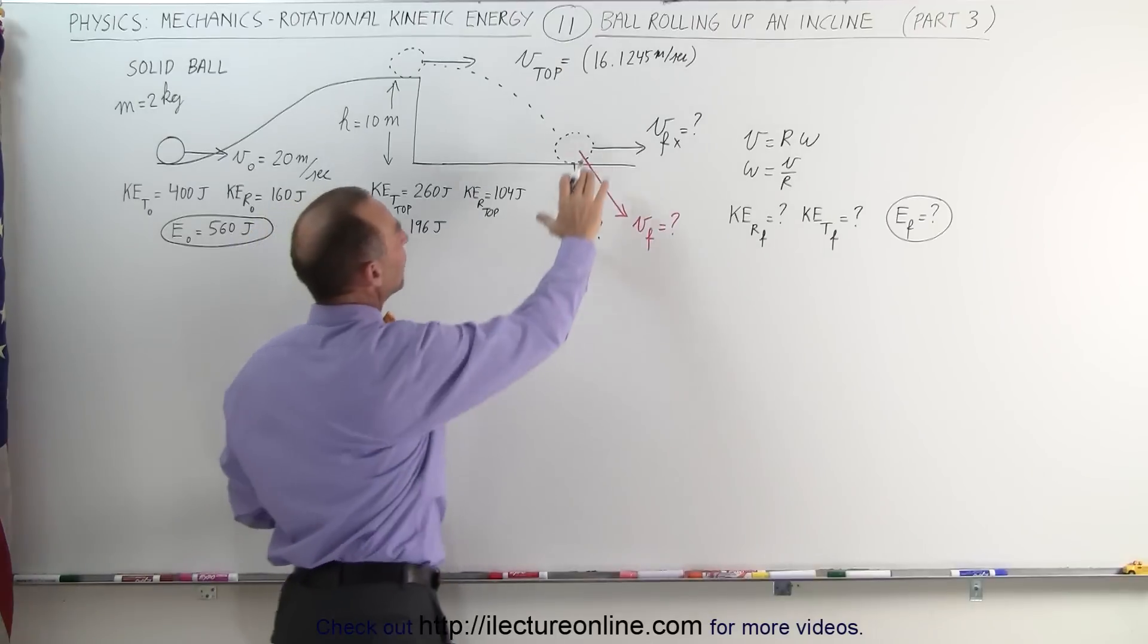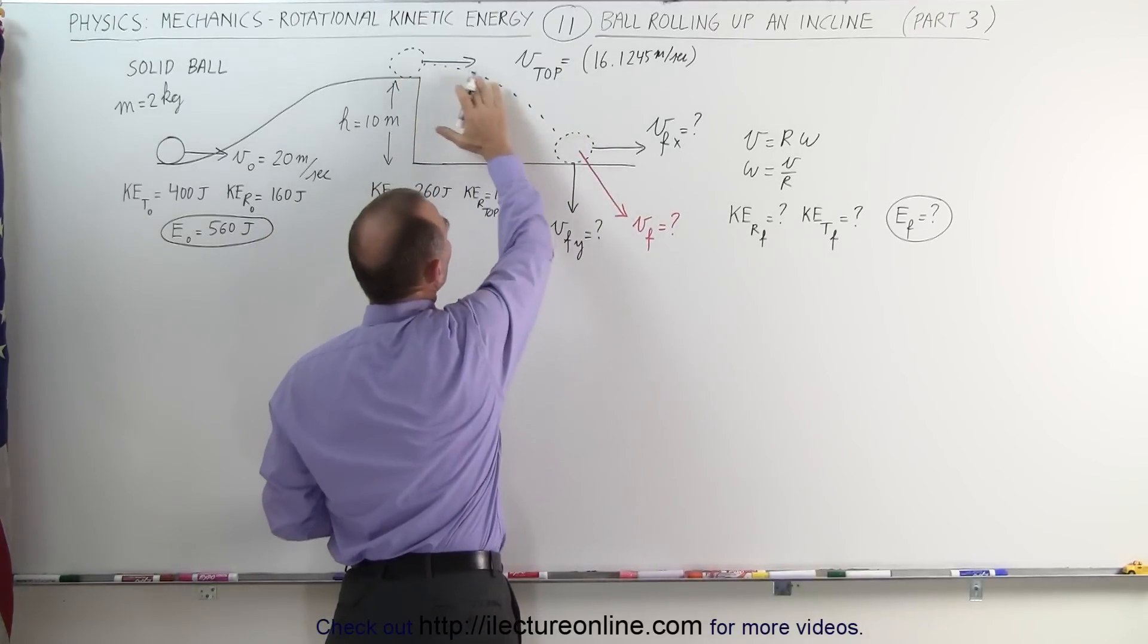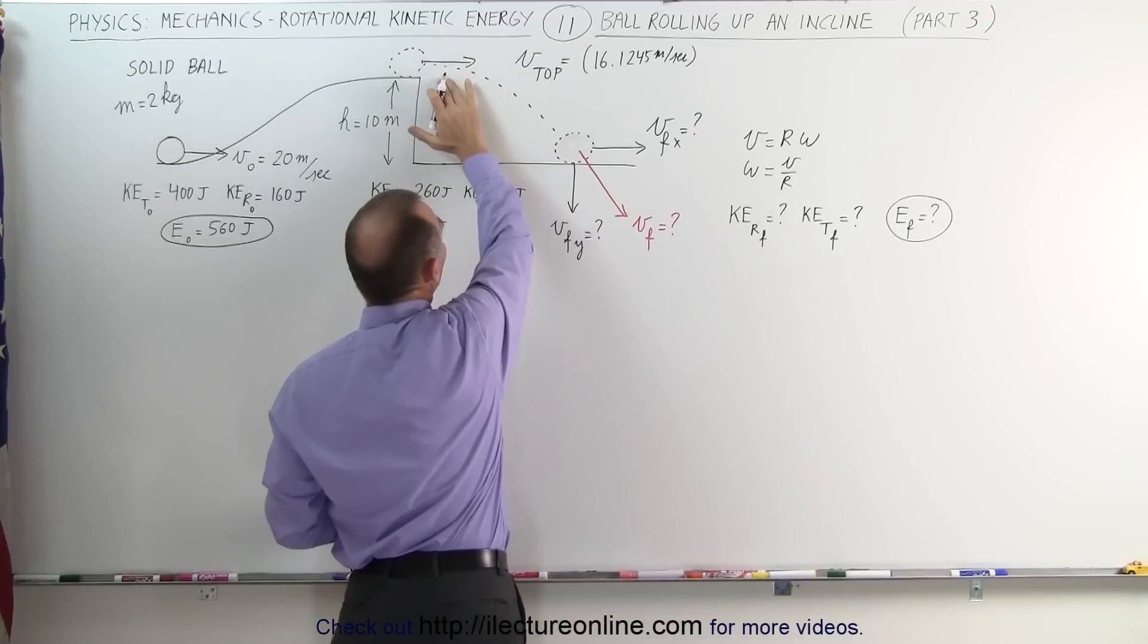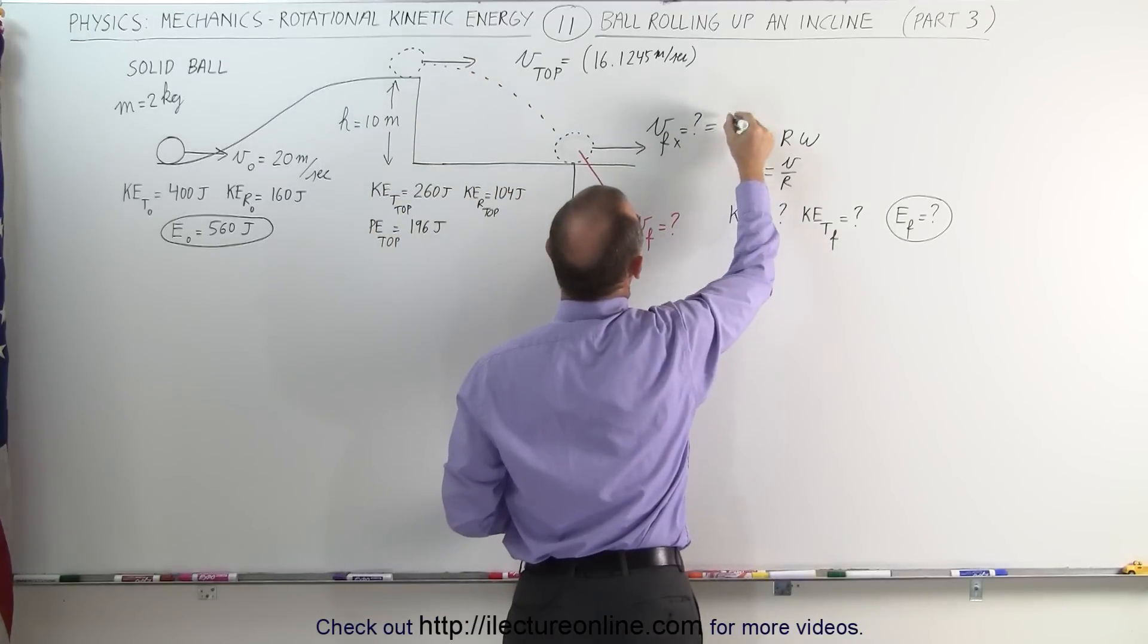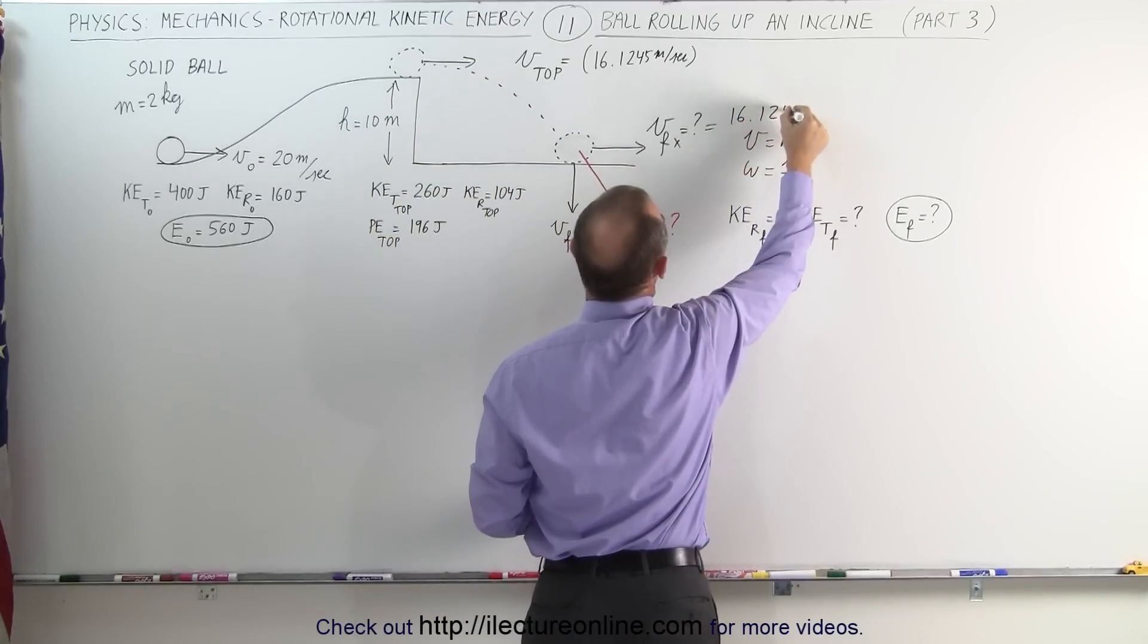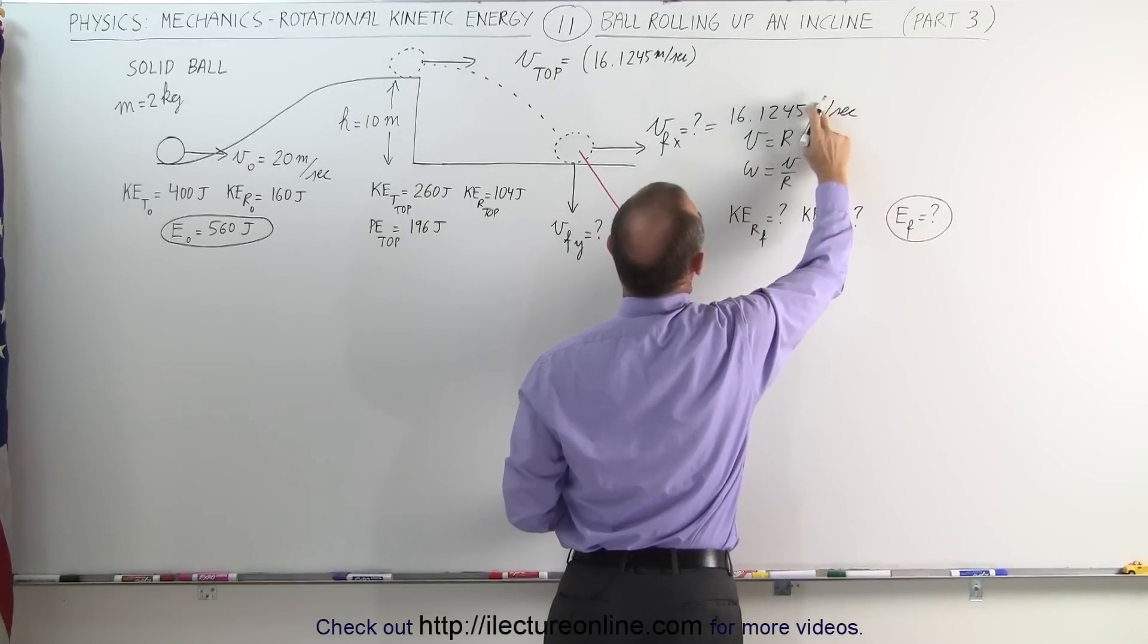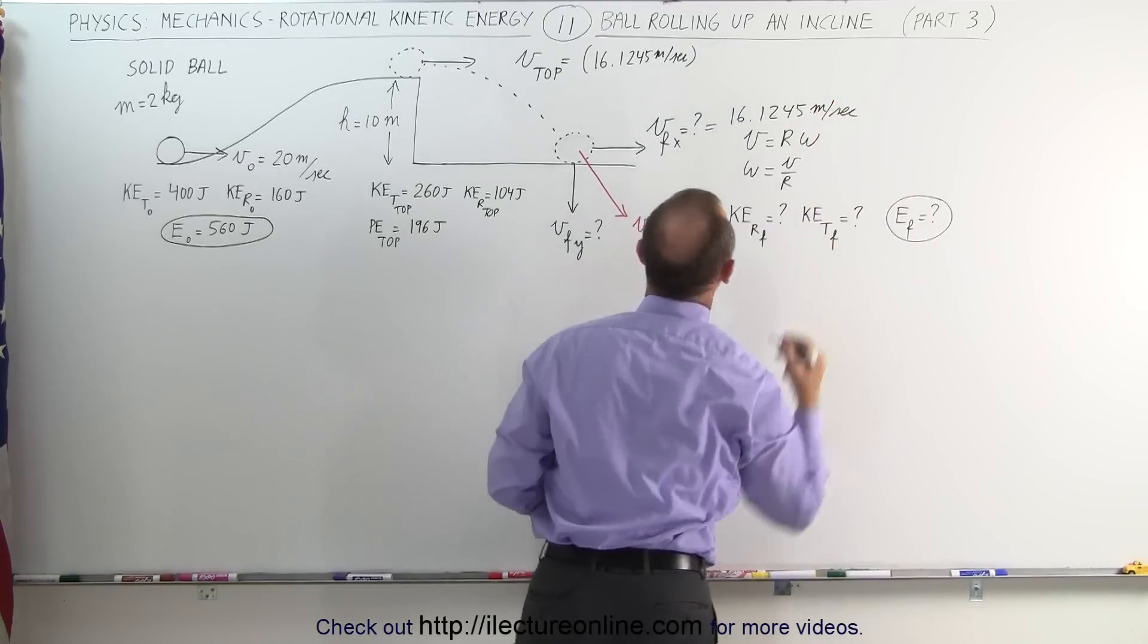So let's find out at the bottom of the hill. Since it's moving in this direction as a projectile, it should still be the same as at the top in the x-direction. This should still be 16.1245 meters per second. It should be a meter sign here, m for meter per second.